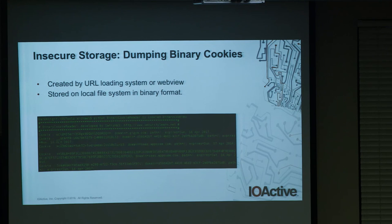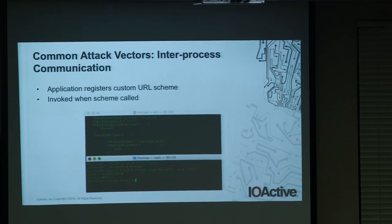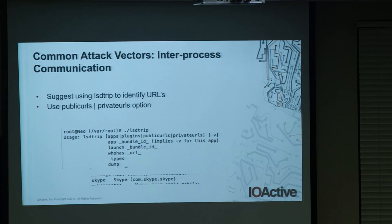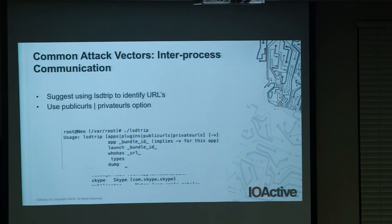There are also binary cookies — the assumption being that binary format means data is inaccessible, which is wrong, since tools exist to retrieve that information. For IPC, apps register URL schemes and can be invoked through them. There was an issue with Skype where a malicious application could invoke Skype to make premium calls without the user's consent — that was the attack vector. To determine a URL scheme, consult the plist file, dump the binary and run strings on it, or use the 'lsd-trip' tool with the 'public-urls' and 'private-urls' options.